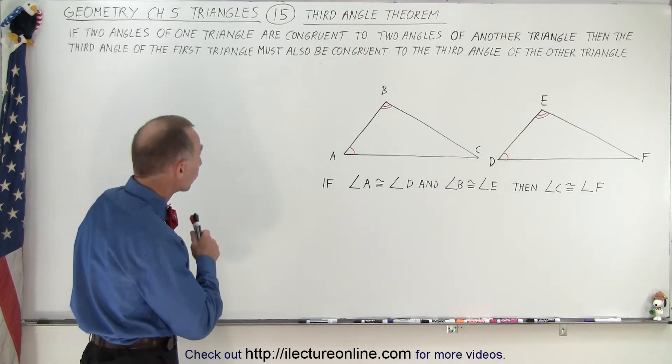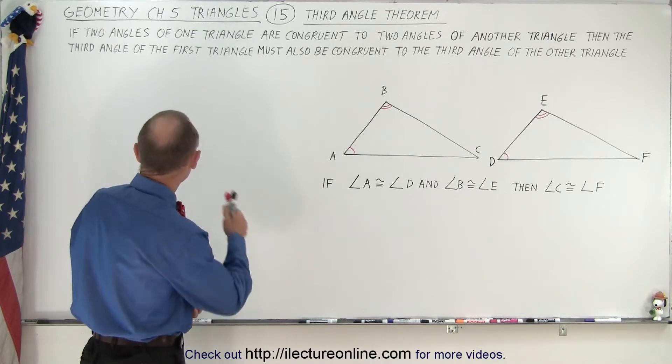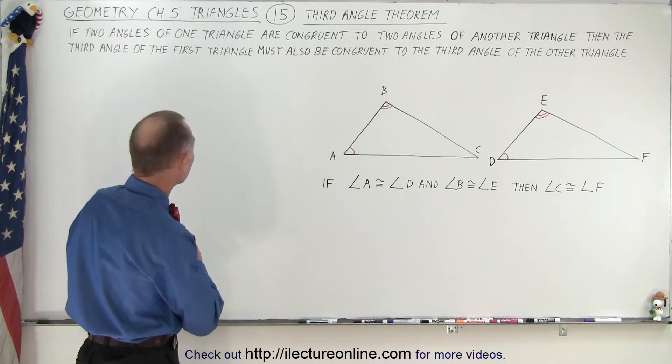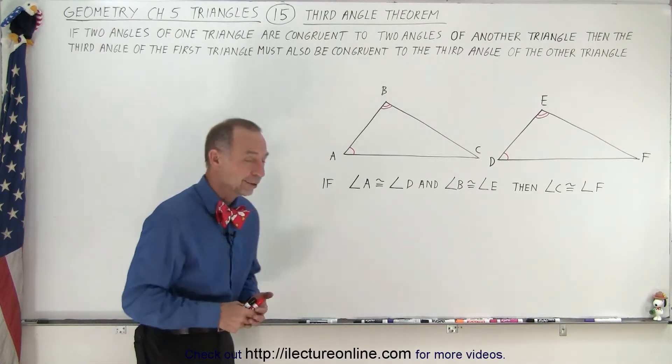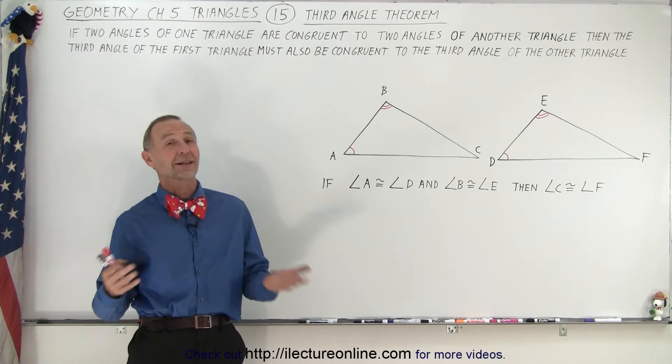one triangle are congruent to two angles of another triangle, then the third angle of the first triangle must also be congruent to the third angle of the other triangle. Now in a way that makes a lot of sense